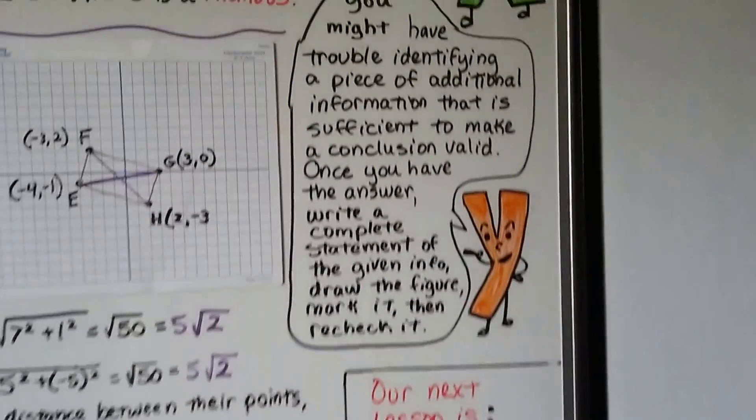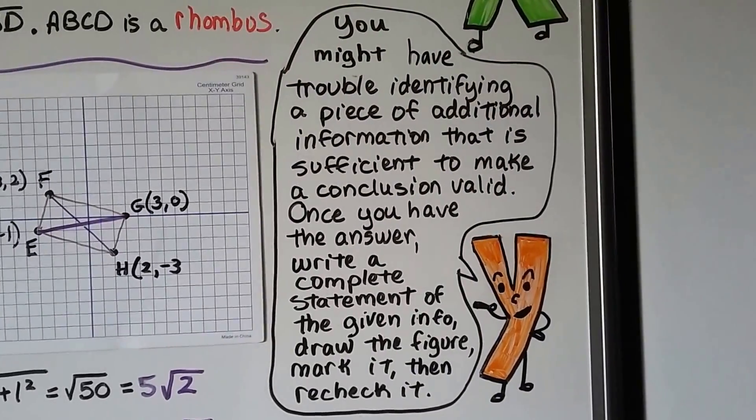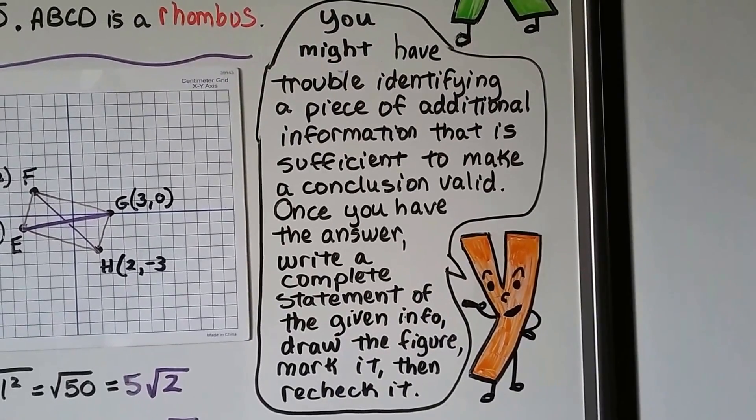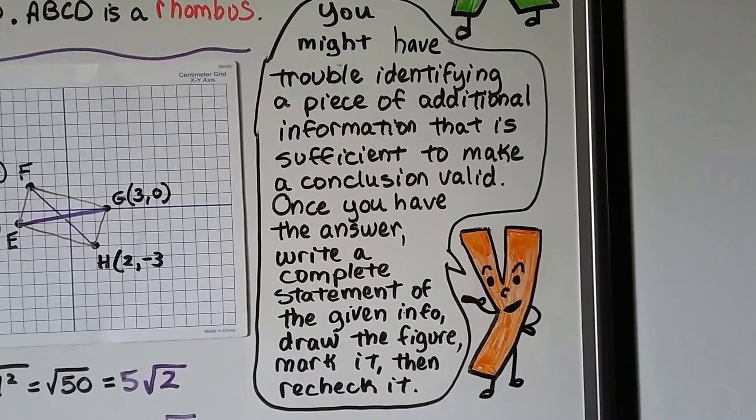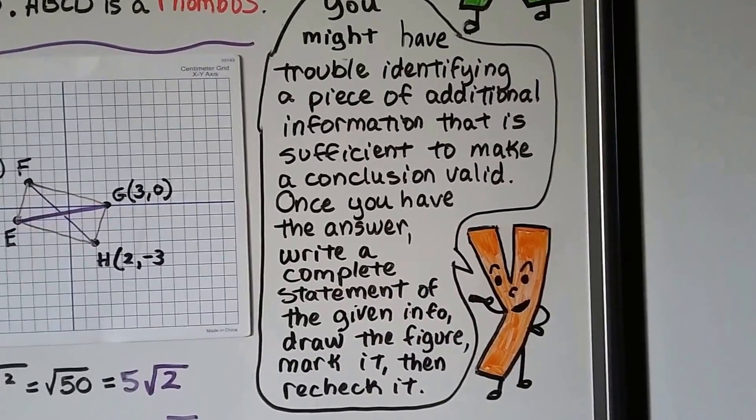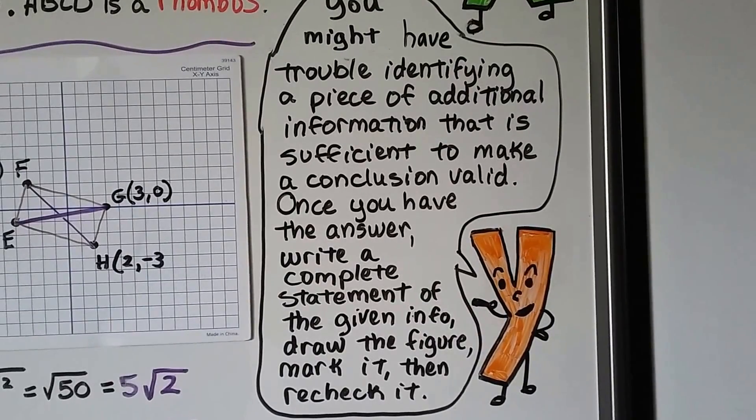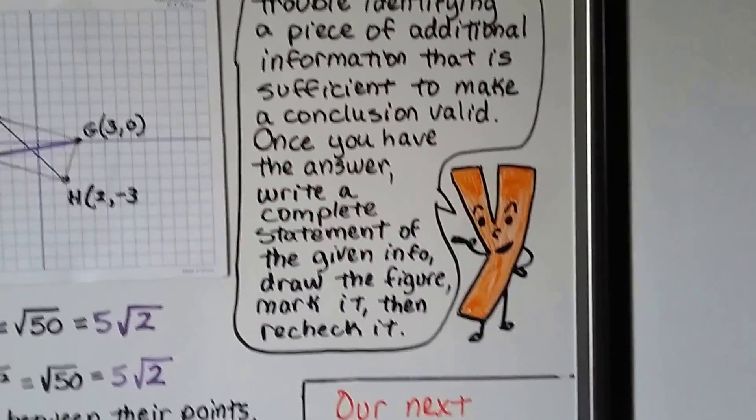You might have trouble identifying a piece of additional information that's sufficient to make a conclusion valid. So once you have the answer, write a complete statement of the given information, draw the figure, mark it up, and recheck it. Hopefully that'll help.